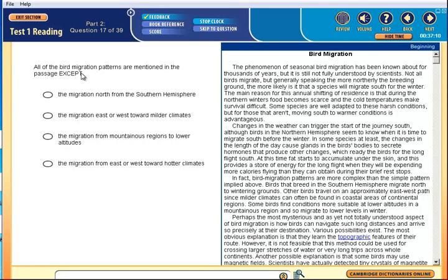All of the migration patterns are mentioned in the passage except migration north from the south, east or west towards mild climates, from mountains to lower altitudes, from east or west towards hotter climates. It seems to be one of these. Patterns, complex. Birds that breathe in the south migrate north, south to north. From south to north, yes. Other birds travel east, west, since milder climates can be found in coastal areas. So they're going towards milder climates. Some birds find conditions more suitable at lower altitudes to lower altitudes. So there is your answer.